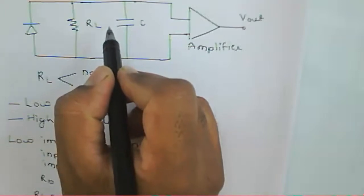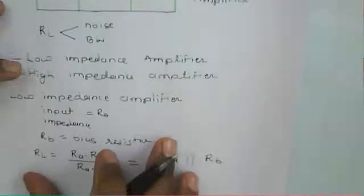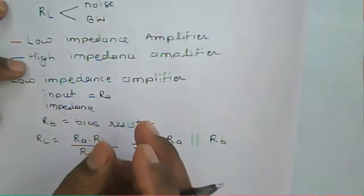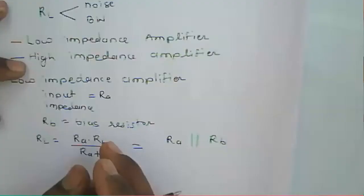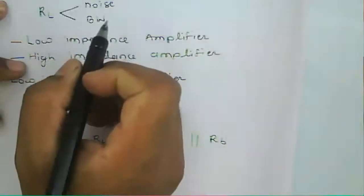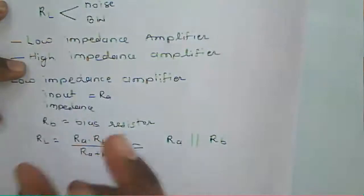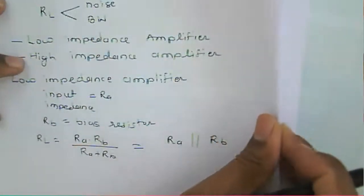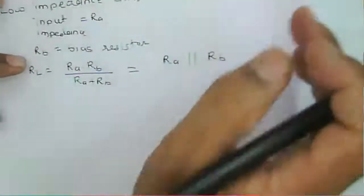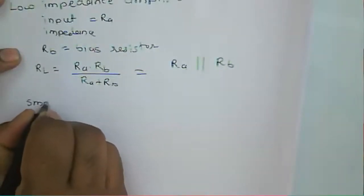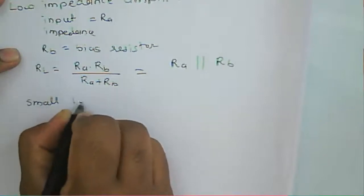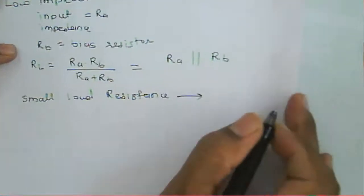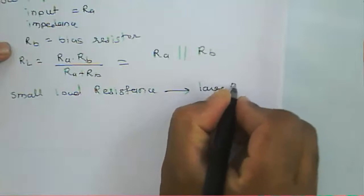For a given particular amplifier, bandwidth must be greater than or equal to the signal bandwidth. The load resistance determines the bandwidth. If load resistance is small, we get a large bandwidth.